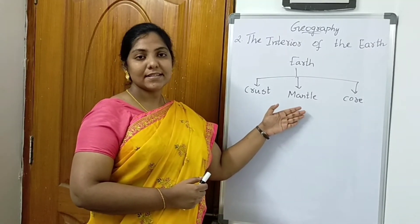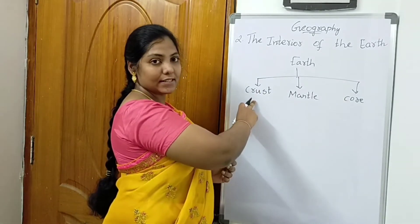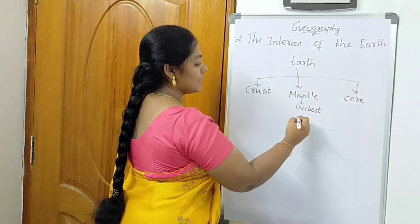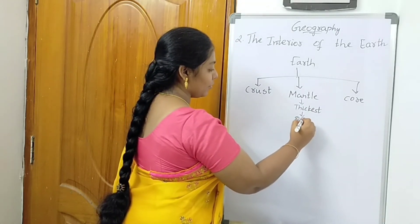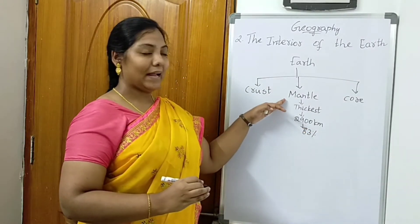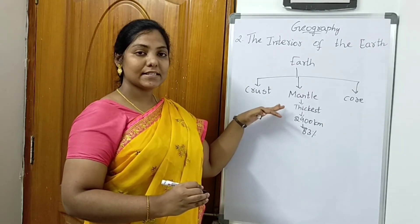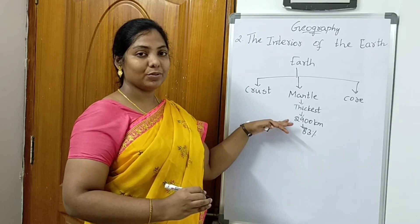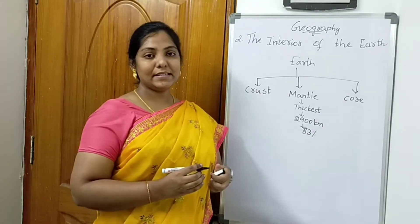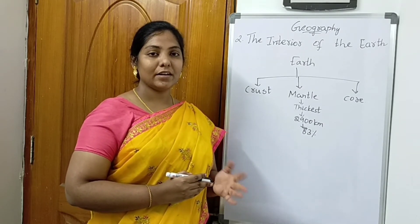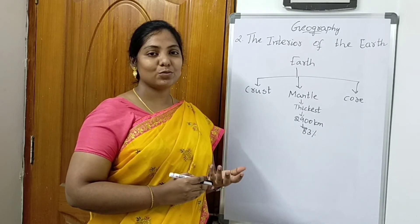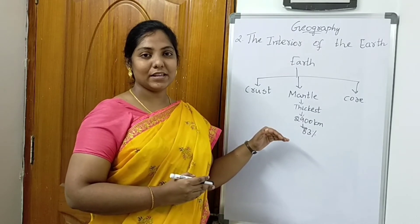Now let us see the mantle. This is the second layer of the earth, and the mantle is the thickest layer of the earth. It is having a depth of 2900 kilometers, occupying 83% of the earth's volume. If we see the mantle layer, the material there is a kind of semi-solid — it is not liquid, it is not solid. It is a viscous material, somewhat smooth. That kind of material is called magma.